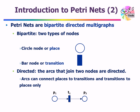Places in Petri Nets capture passive elements in a system, and transitions capture active elements. So if you have processes or events, they are modeled as transitions. If you have conditions, buffers, or data elements, they are modeled as places.